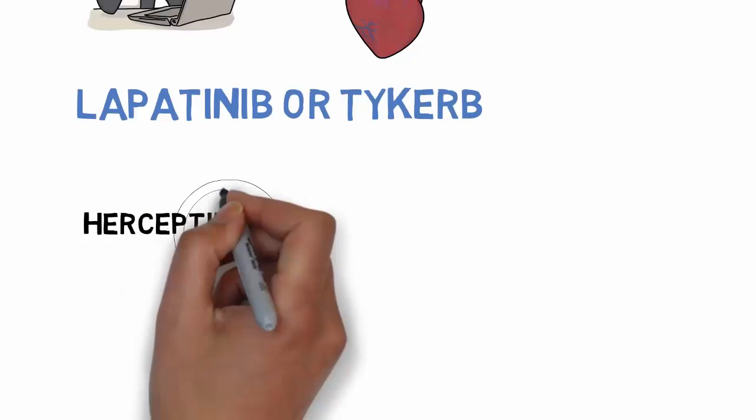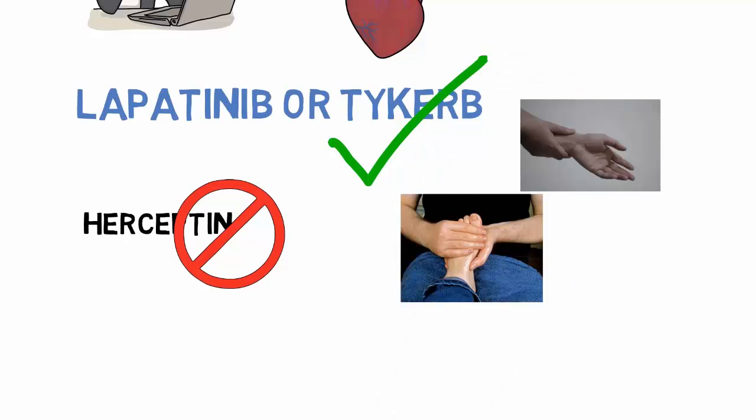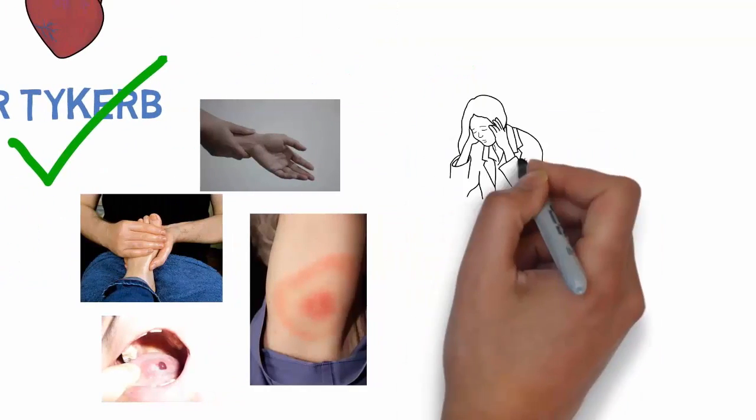Lapatinib or Tykerb: Sometimes Herceptin does not suit some patients. In that case, Tykerb is used to target the HER2 protein. Side effects may include painful hands and feet, skin rashes, mouth sores, extreme tiredness, diarrhea, vomiting, and nausea.